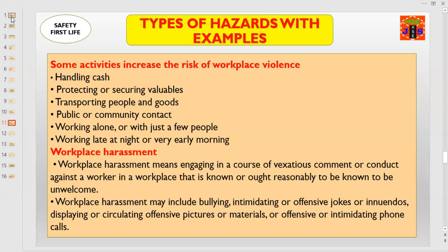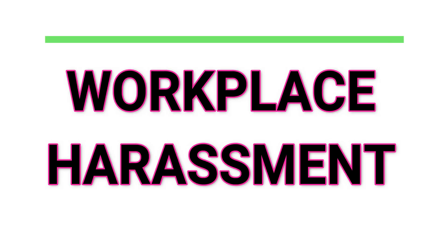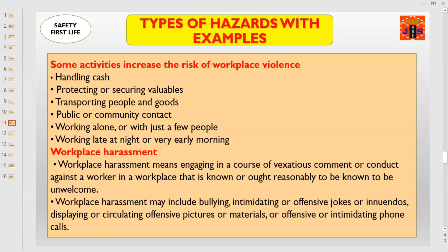Another form of workplace violence is workplace harassment. Workplace harassment means engaging in a course of vexatious comment or conduct against a worker in a workplace that is known, or ought reasonably to be known, to be unwelcome. Workplace harassment may include bullying, intimidating or offensive jokes or innuendos. These all are examples of different shapes and forms of workplace harassment.